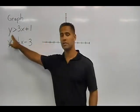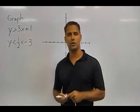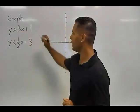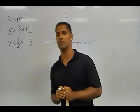So let's start with the inequality y is greater than 3x plus 1. The first thing we do to graph this inequality is to take a look at where this line is going to cross the y axis, which is that positive 1.